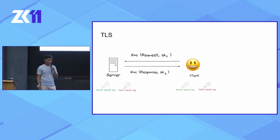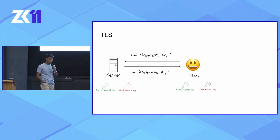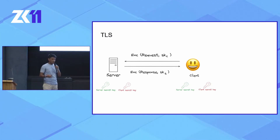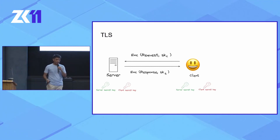For that, we need to dive deeper into TLS. TLS secures all connections on the internet today — it's generally called the S in HTTPS. You have two parties in TLS: the client and the server. The client sends the request encrypted using the client secret key to the server, and the server responds with the response encrypted using the server secret key.